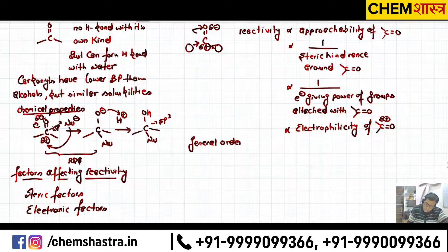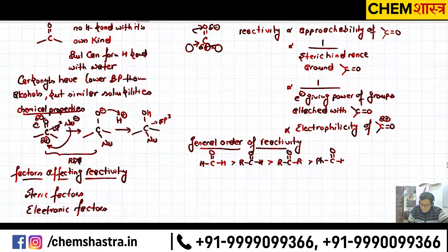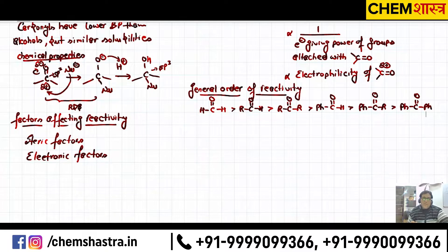The general order of reactivity: the smaller and more non-electron-donating the group, the better. Starting with hydrogen — the smallest thing — two H's attached is the best case. Then one R and one H. As size increases and electron-giving influence comes in — say benzene on one side, or R on one side and benzene on the other, or benzene on both sides — reactivity keeps decreasing.